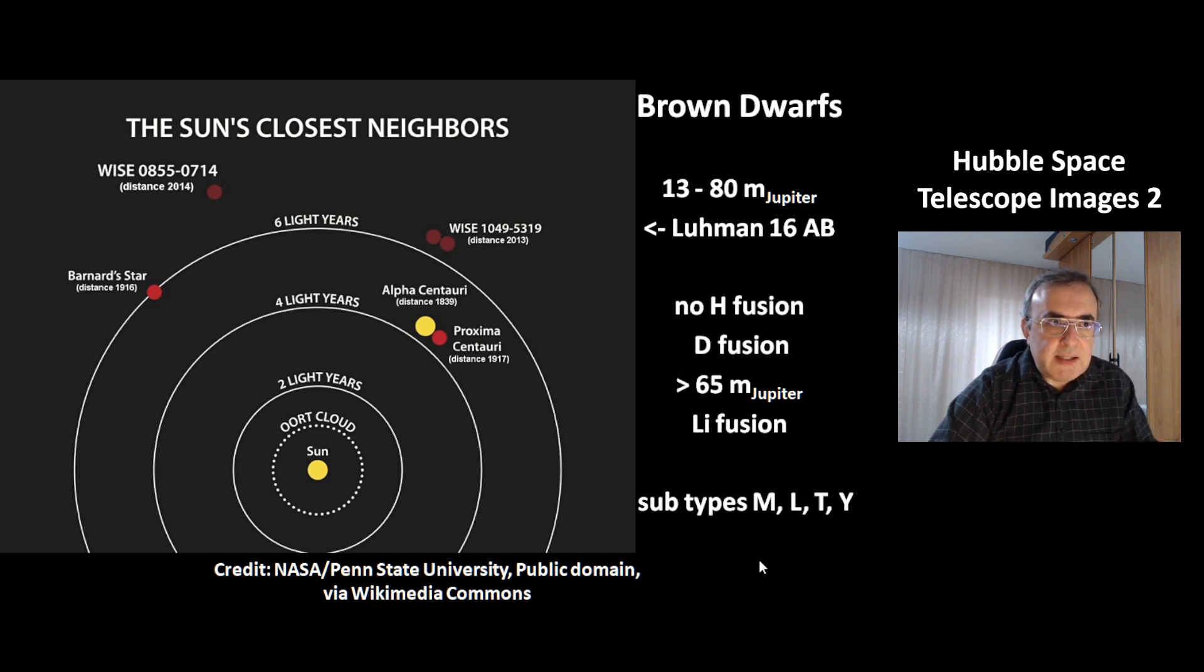Among the brown dwarfs there are four subtypes: M, L, T, and Y. And there are several more brown dwarfs in our stellar neighborhood.